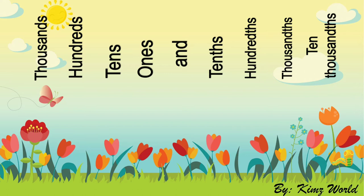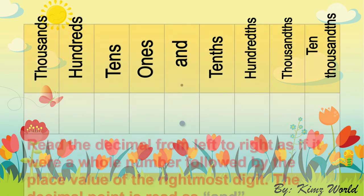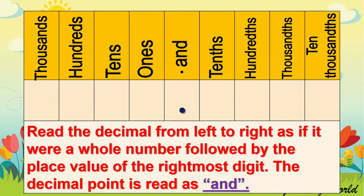Reading decimal numbers is like reading a whole number. We start from the left to the right. We will use the place value chart. This place value chart will help us read the decimal number properly. The rule is: read the decimal from left to right as if we are reading a whole number, followed by the place value name of the rightmost digit. The decimal point is read as 'and.'